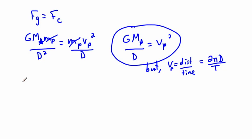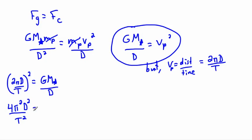So I'll say 2 pi d over t, that's my v and I square it. That's going to be GM over d. This is v squared. So 2 squared is 4. Pi squared is just pi squared. This is just d squared. And t squared is just t squared. All that equals GM star over d.